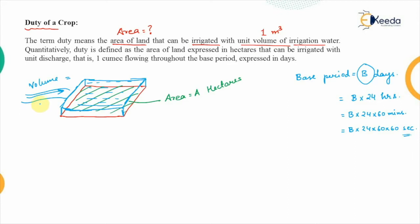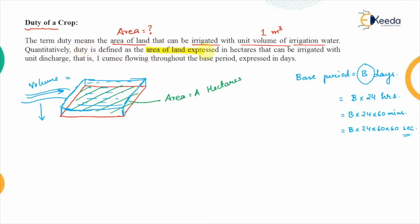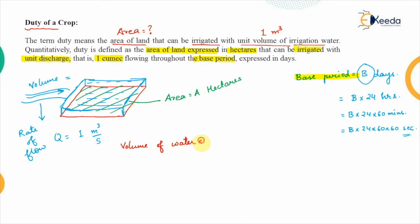Now the rate at which the water is flowing — looking at the definition of duty, it is the area of land expressed in hectares that can be irrigated with unit discharge. That means the rate at which water flows is 1 cubic meter per second, also known as 1 cumec, and it is flowing throughout the base period. The rate of flow Q has a unit value of 1 cubic meter per second, meaning volume of water supplied in 1 second equals 1 cubic meter.